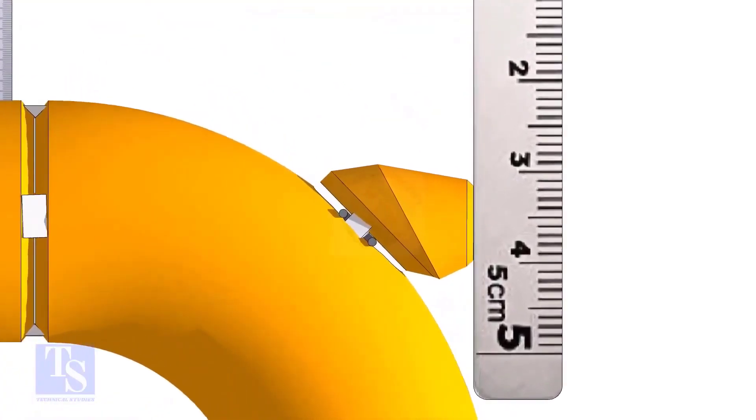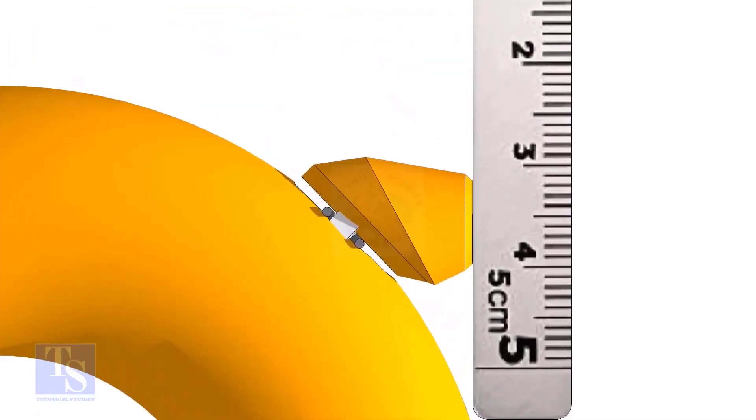Maintain the vertical squareness and tack weld on the top and bottom side of the elbowlet.